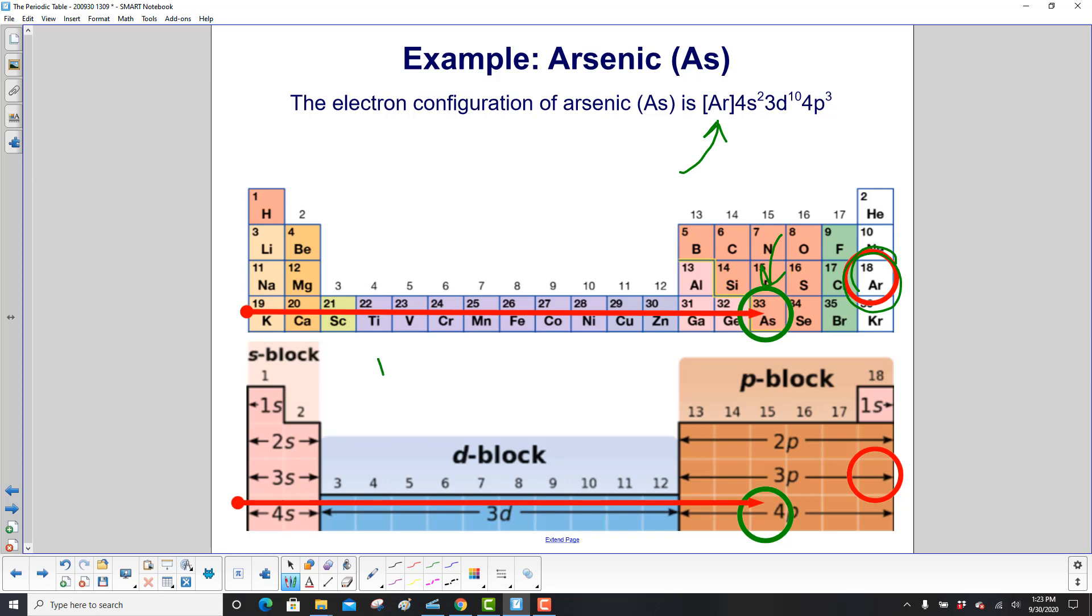Then we go to arsenic's level, the fourth period here. So we pick up two s electrons here. So that'll be 4s2, because it's in period four. We pick up all the 3d electrons. So that's 3d10. And then we count over 1, 2, 3, and we get 4p3.